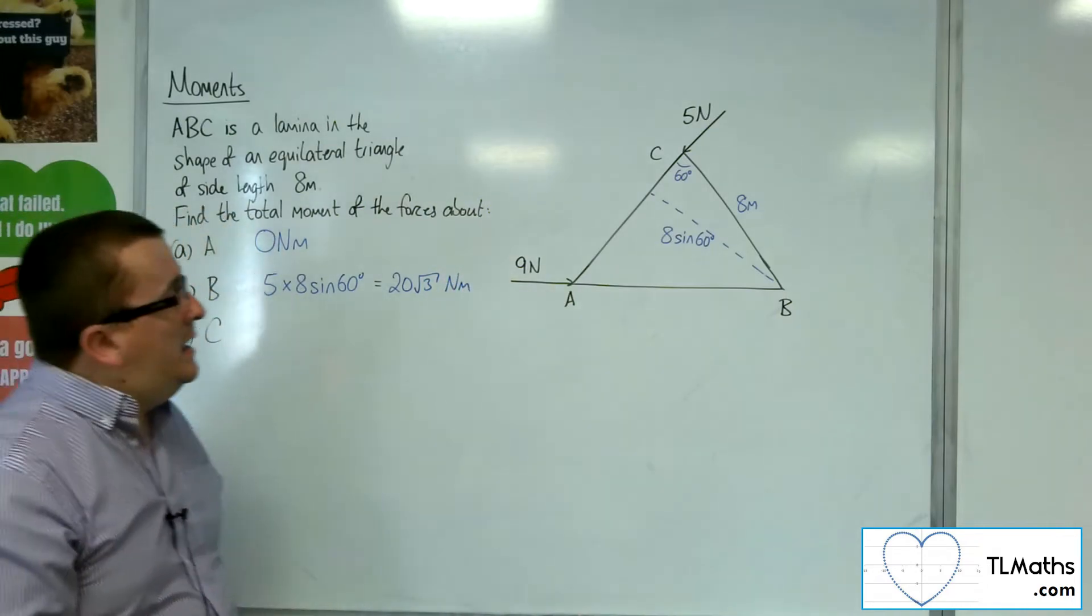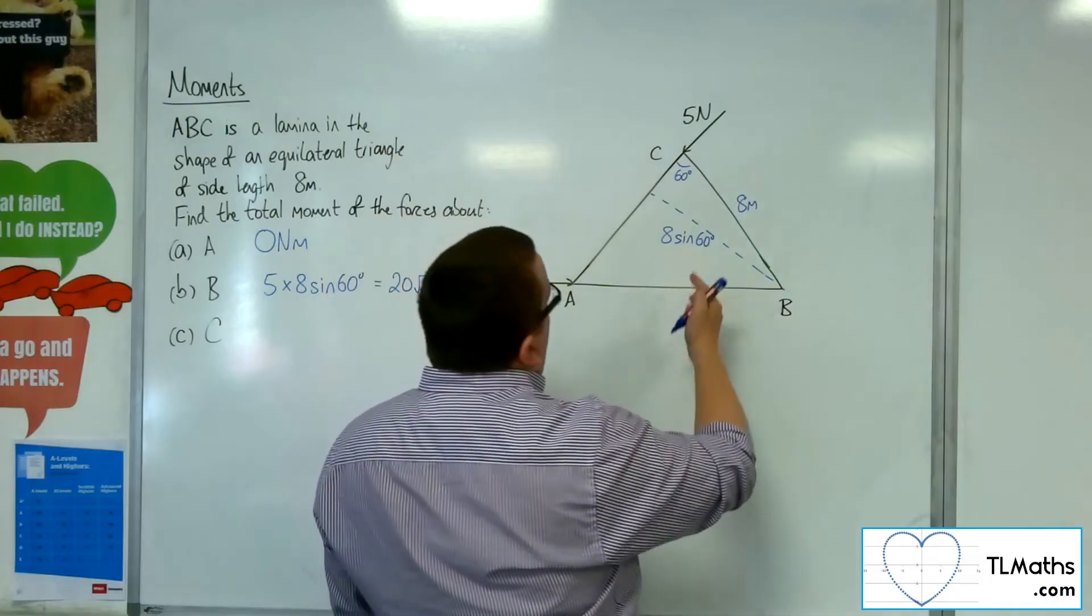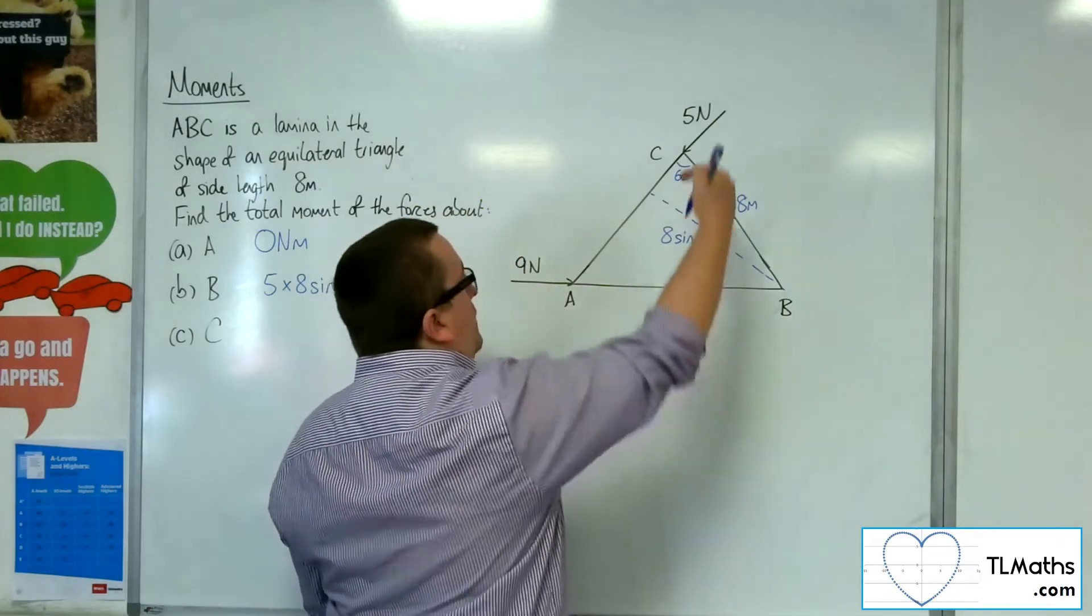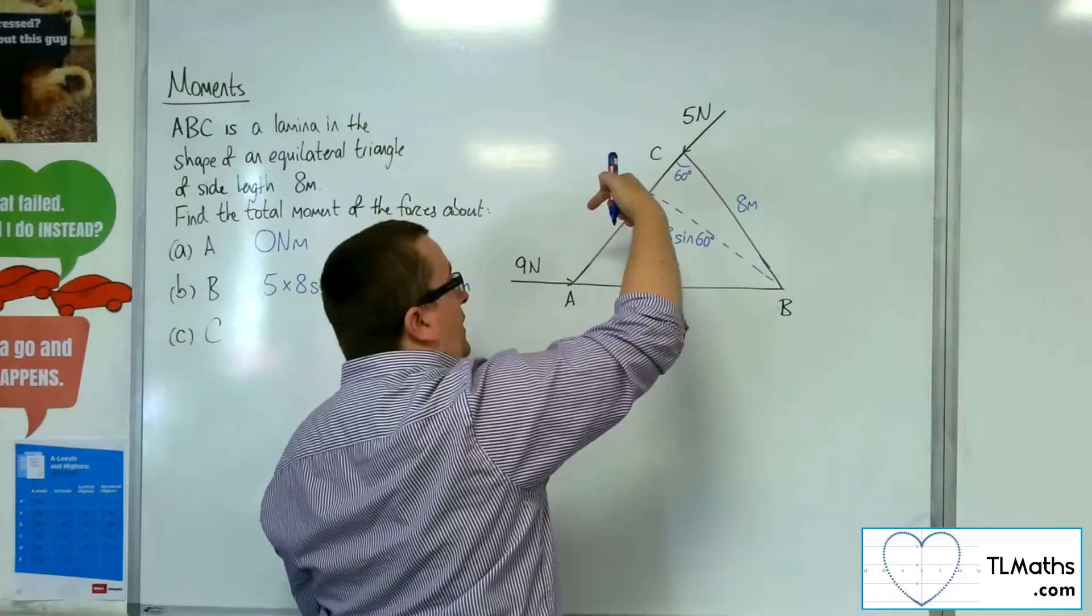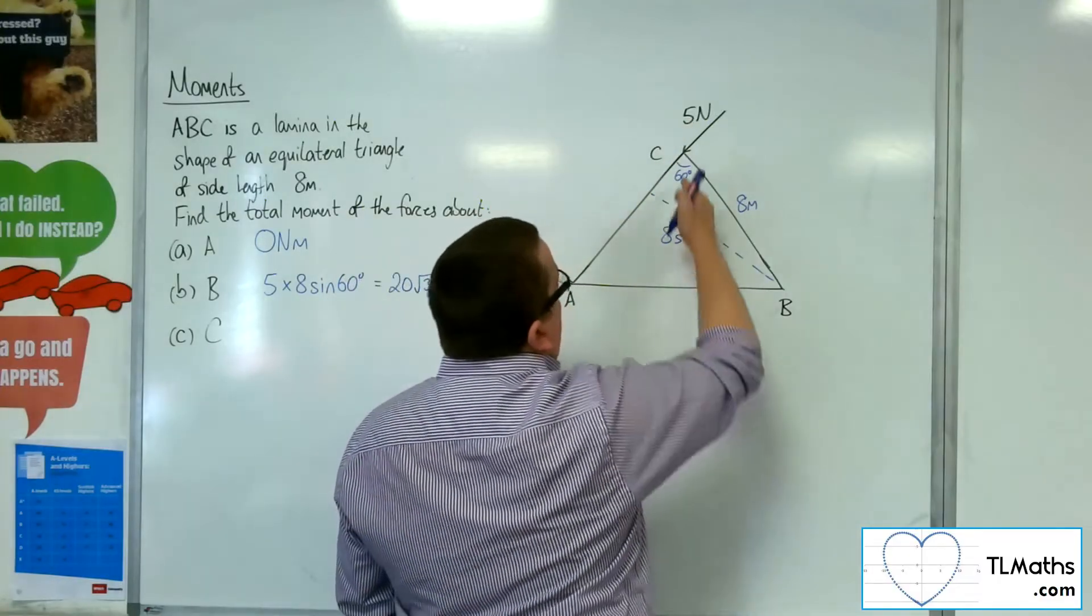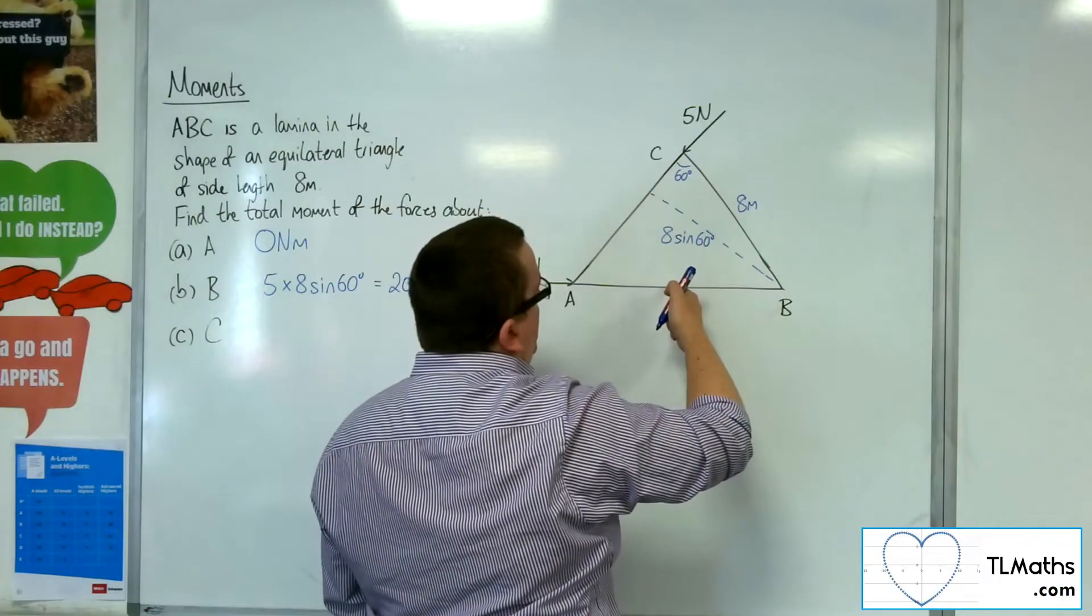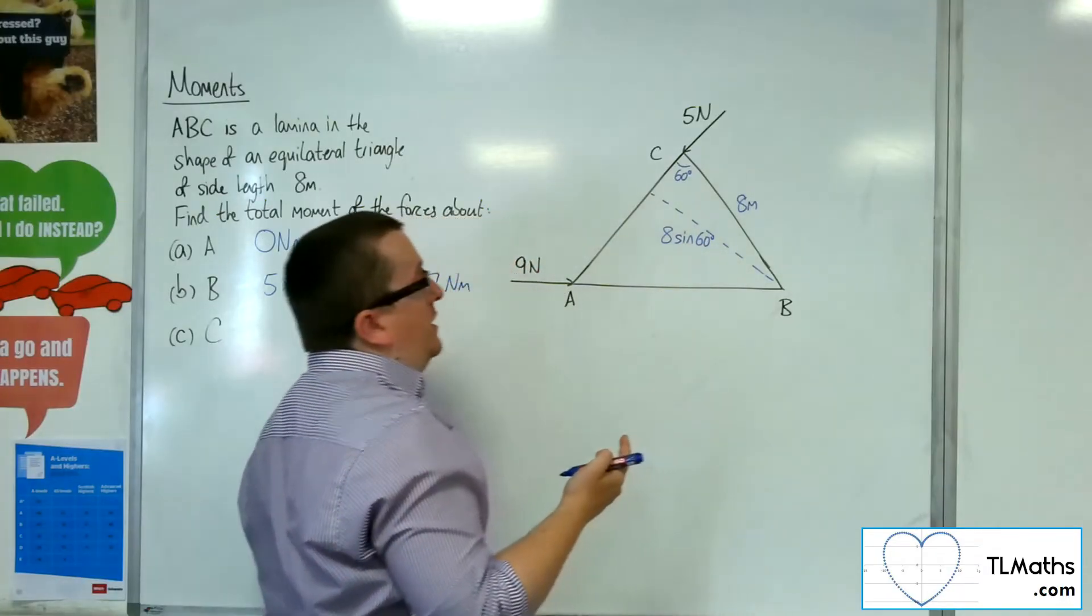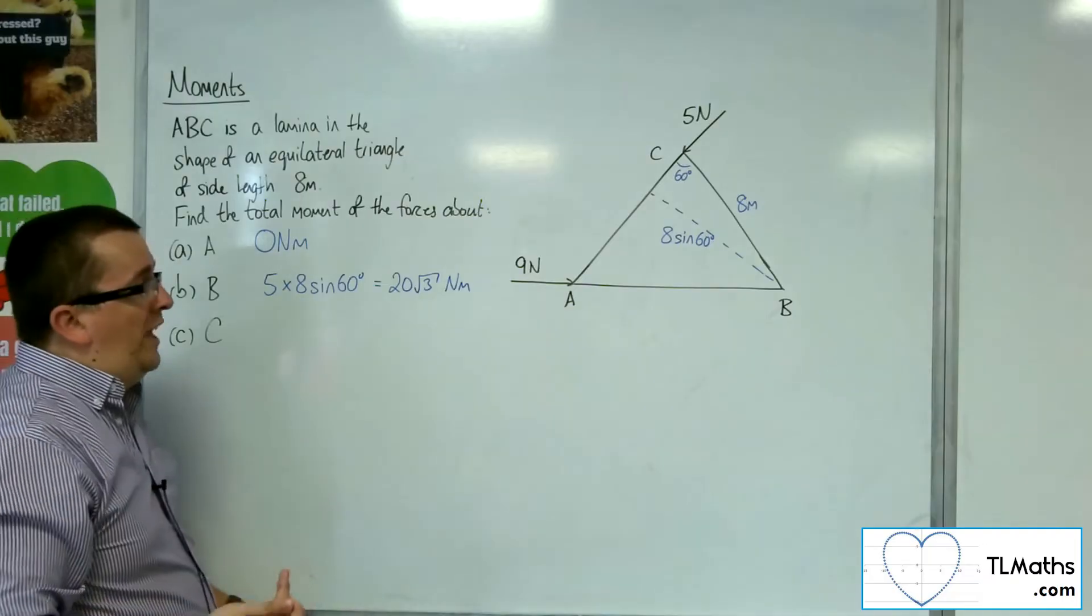Now, as for C, C has this 9 newton one. The 5 newton is going through C, so that won't affect it. The 9 newton one, however, will. This distance is precisely the same distance as the 8 sine 60 that we had there. So I can use that result.